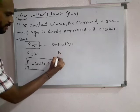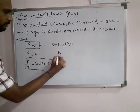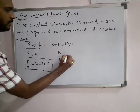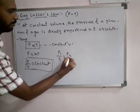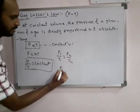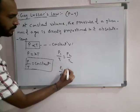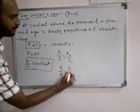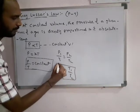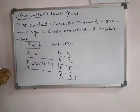From this relation we will get P1 by T1 is equal to P2 by T2, or equivalently P1 by P2 is equal to T1 by T2.